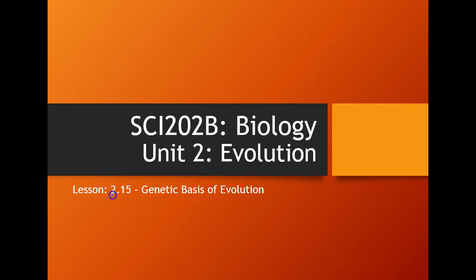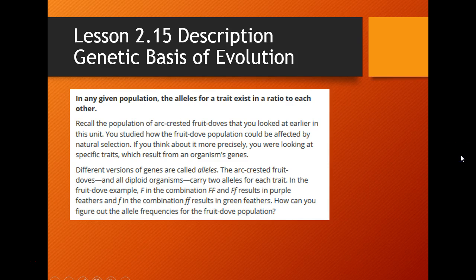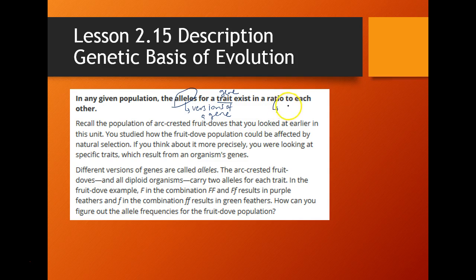This is the recording for lesson 2.15: the genetic basis of evolution. In any given population, the alleles — different versions of a gene for a trait — exist in a ratio to each other. When we talk about a ratio, we're talking about the proportions in which they exist.